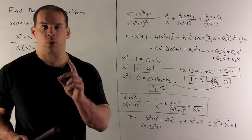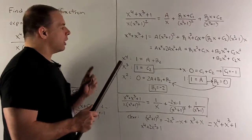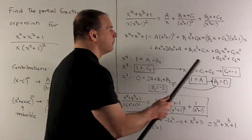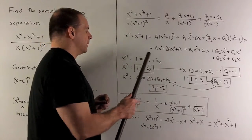Now, for x to the fourth, what do we get? On this side, I have a 1. On the other side, we go through. We'll have an A and a b2. So we'll have 1 equals A plus b2.